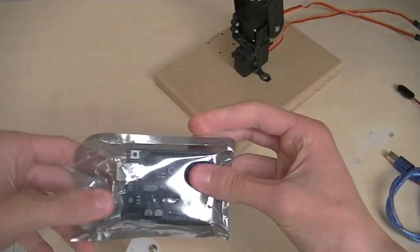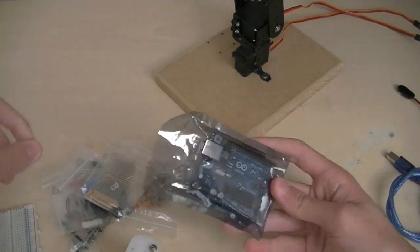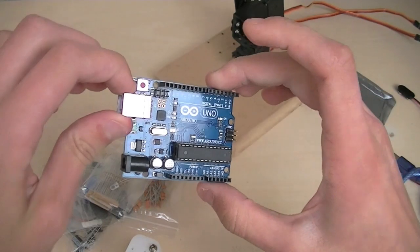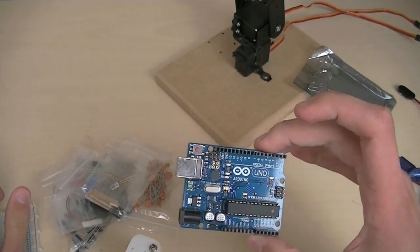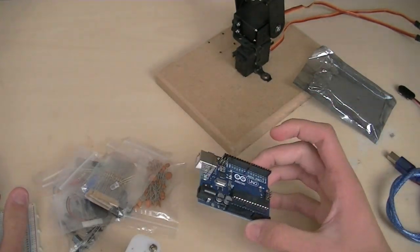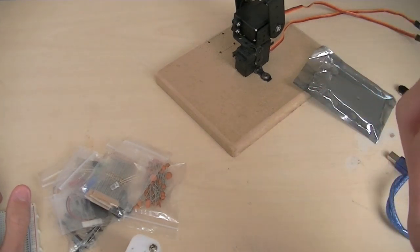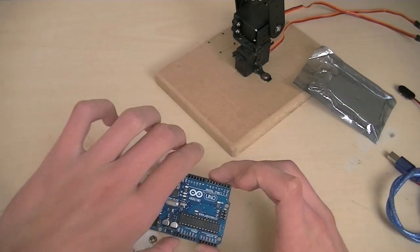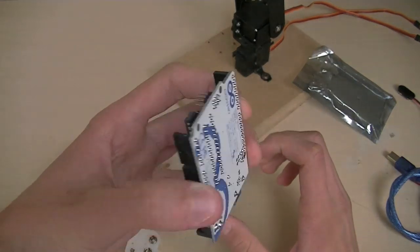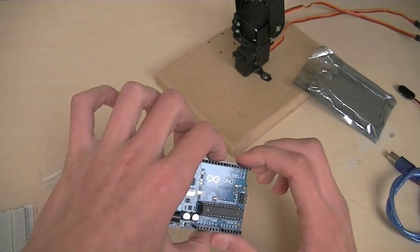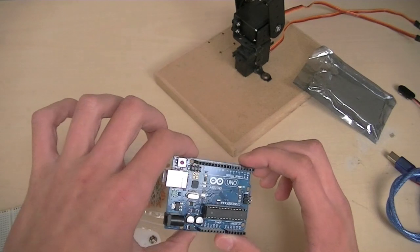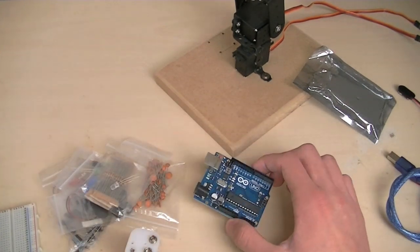So I ordered an Arduino board off eBay, and it turns out this one is actually a fake. Always be sure when you're ordering them that you get a proper one. I was kind of annoyed at this because it cost me the same price as a normal one. But anyway, it still does the job.